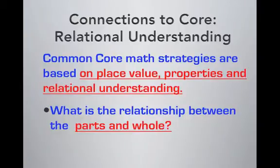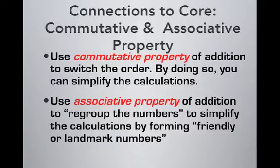Core math strategies are based on place value properties and relational understanding, because those particular strategies can really build and assist us with things that are more complex as we move into additional standards and ideas. Today we're really going to be reminded of the power of the commutative property — switching the order of numbers and still ending up with the same sum — and also the associative property of how we can decompose numbers and associate them in different ways so that we get to those landmark or friendly numbers.